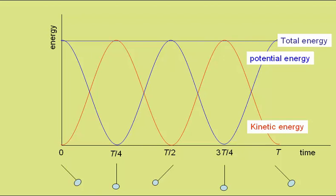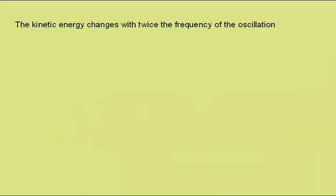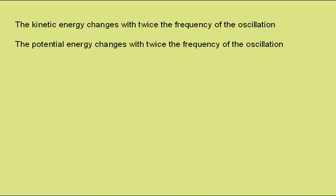So you see from this graph that both the potential energy and the kinetic energy go through two complete cycles, while the pendulum goes through one complete cycle. So the kinetic energy changes with twice the frequency of the oscillation. The potential energy also changes with twice the frequency of the oscillation.